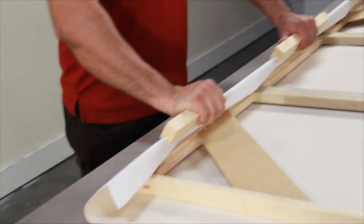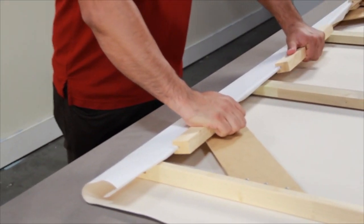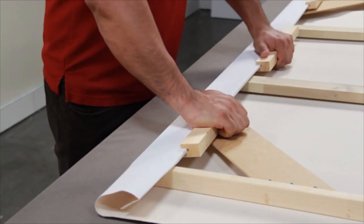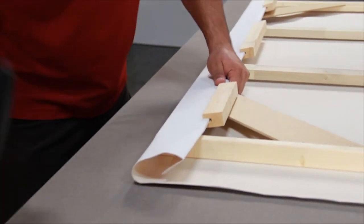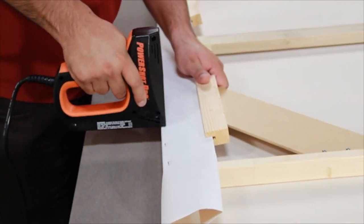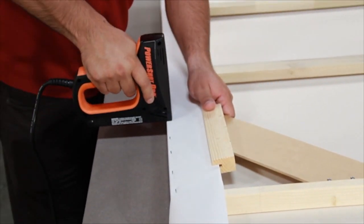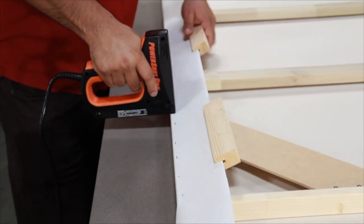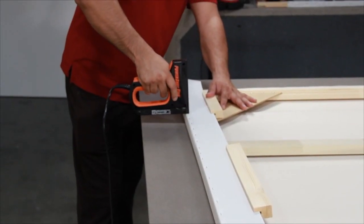After the clips are attached, ensure the lever is positioned into the top groove of the stretcher bar. Gently push down the lever to create the tension to stretch your canvas. And then holding the lever down with one hand, use your staple gun to start attaching the canvas to your stretcher bar.